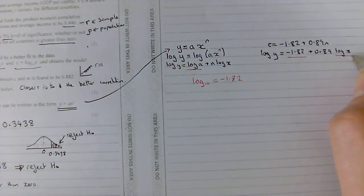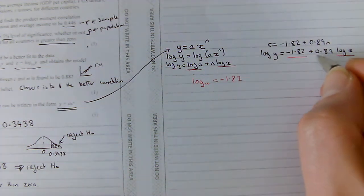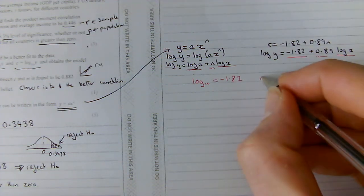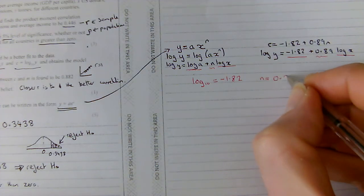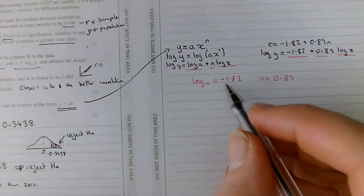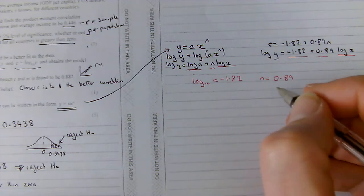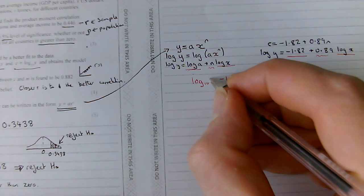I've got log x on both sides and I've got a coefficient. N is 0.89. So, this should be log base 10 of A.